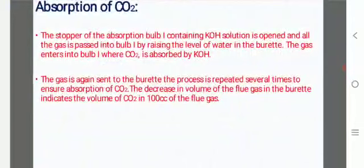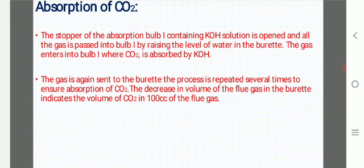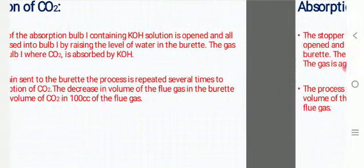Absorption of CO2: The stopper of the absorption bulb I containing KOH solution is opened and all the gas is passed into bulb I by raising the level of water in the burette. The gas enters into bulb I where CO2 is absorbed by KOH. The gas is again sent to the burette. The process is repeated several times to ensure absorption of CO2. The decrease in volume of the flue gas in the burette indicates the volume of CO2 in 100cc of the flue gas.